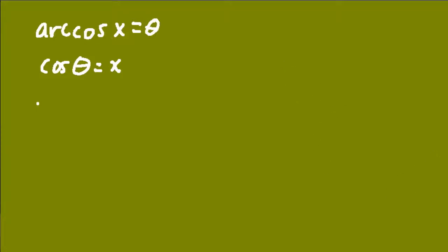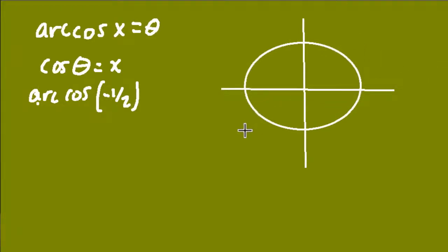Let's look at the arc cosine of negative 1 half. Let's find out what angle gives us the arc cosine of negative 1 half. How do we do that? I'm going to set up a unit circle and draw it right here. And there's my x and y axis. That's my unit circle.